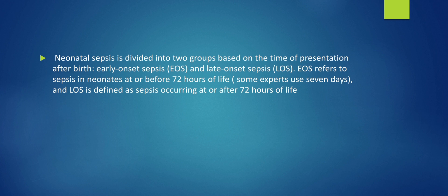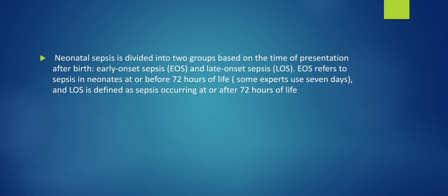Neonatal sepsis is divided into two groups based on the time of presentation after birth: early onset sepsis and late onset sepsis. Early onset sepsis refers to sepsis at or before 72 hours of life — though some literature says the first seven days — with 95% of infections presenting within the first 72 hours. Late onset sepsis is defined as sepsis occurring at or after 72 hours of life.